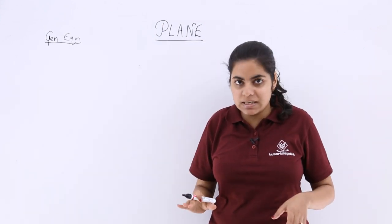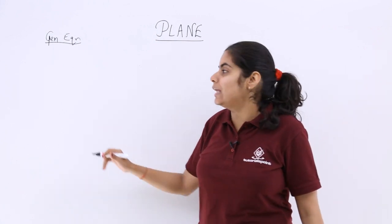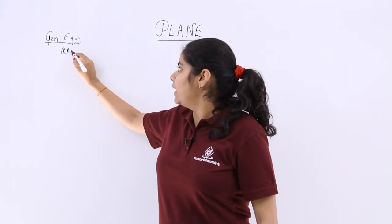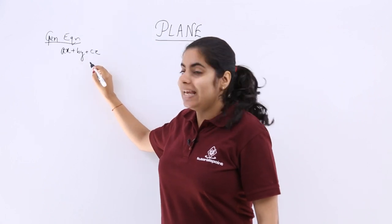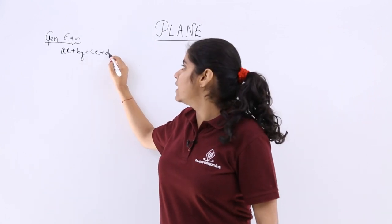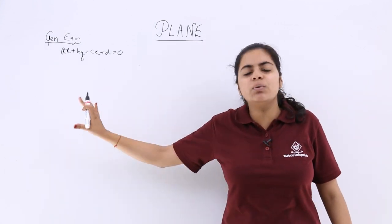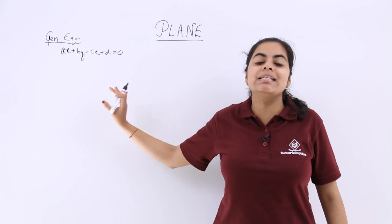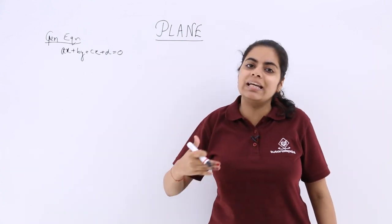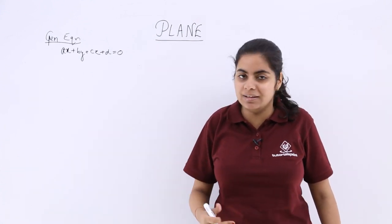Every first degree equation in x, y, z variables is the equation of a plane. So the general equation of a plane can be named as ax plus by plus cz plus d is equal to 0. We are not going to go into the depth of it, but this should be remembered and this is the very basic for solving any kind of questions, even of a higher level.